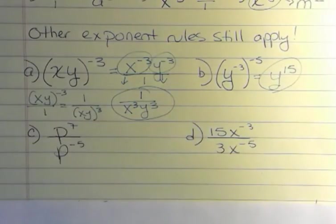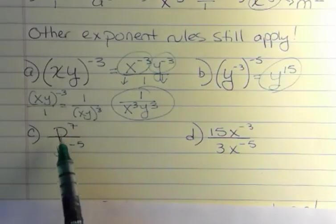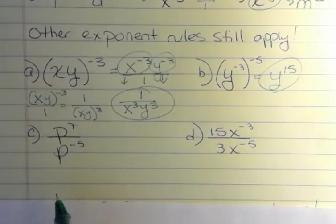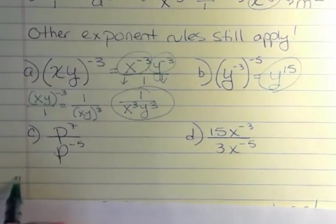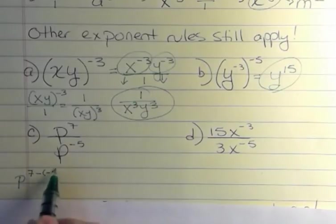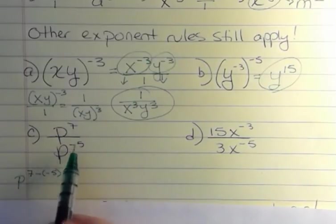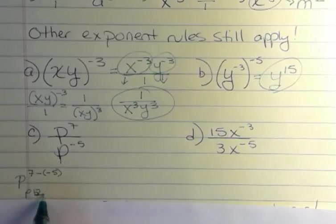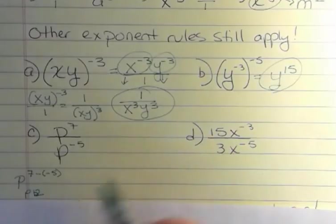Let's look at two more examples. When I want to simplify something with the same base, you remember the rule, we subtract the exponents. So you can do it that way. You can say this is actually p to the seventh minus negative 5. We're subtracting a negative. That's how we get p to the 12th.